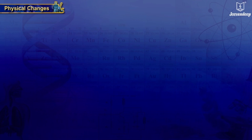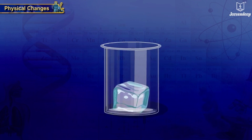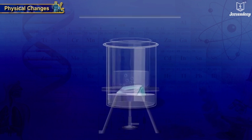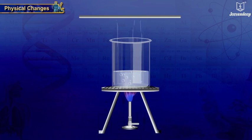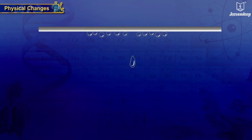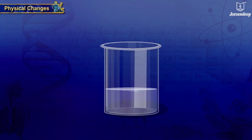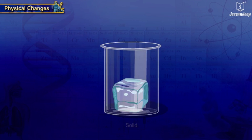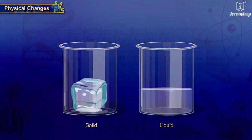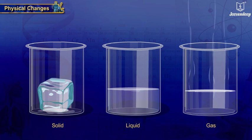For example, ice changes to water, water into vapors. Vapors are condensed back to water and then ice. In this whole process, the form of matter, that is water, keeps changing from solid to liquid and to gas. But the chemical constituent remains H2O for all of them.